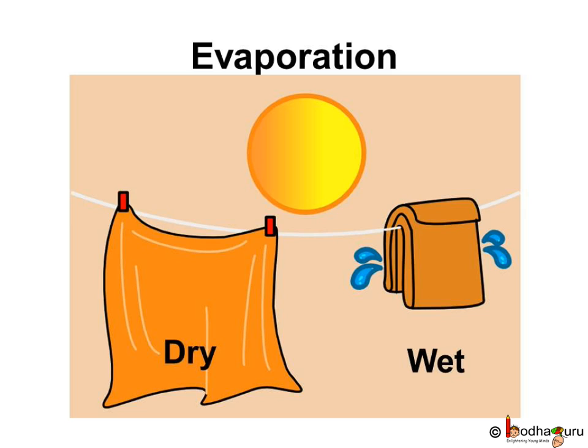Let us do another small experiment. Take two wet towels. Make two folds of the first towel. Hang both the towels on a clothesline to dry in the sunlight. Which towel will dry faster and why? The folded towel takes longer to dry. The second towel, which was unfolded and stretched properly, dries faster because a larger area is exposed for evaporation, and hence evaporation is faster.